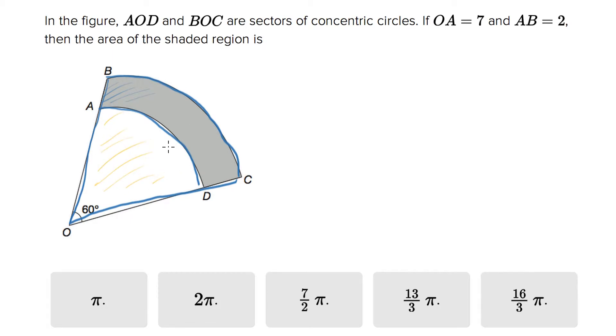They tell us the angle on that sector is 60 degrees. 60 is one-sixth of a circle since a full circle is 360 degrees. They also tell us OA is 7 and AB is 2, so together it is 9.